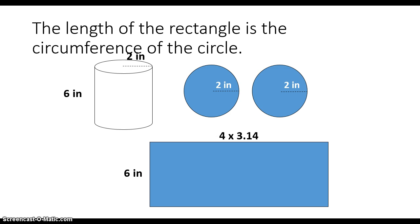The diameter is four, because remember, the diameter is the total length across a circle. I already know the radius, which represents half of the diameter. So the whole diameter is two plus two, or four. I would take four and multiply it by 3.14, which is the estimate we're going to use for pi.